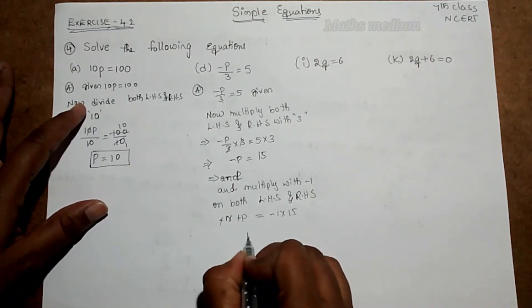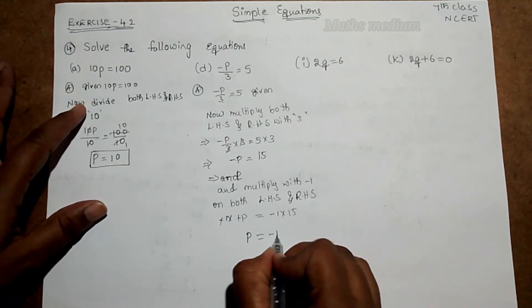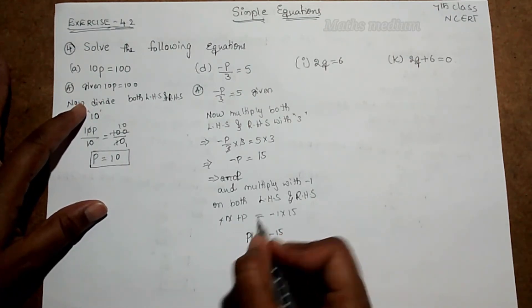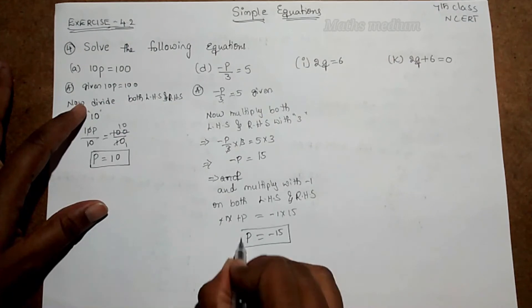So minus minus gets cancelled, p here, here minus 15. Otherwise minus into minus we get a positive. So this is the answer for this question.